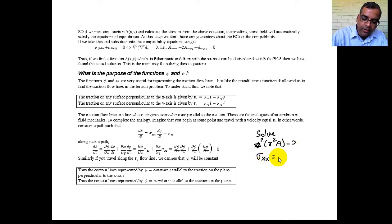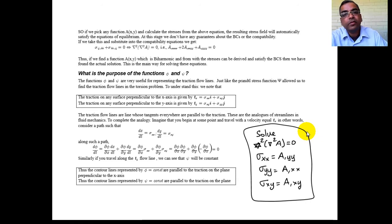Sigma yy is a comma xx, sigma xy is minus a comma xy. This will satisfy everything. I reduced it to finding del squared del squared a equal to zero. So the question is, how do you solve this? How do you solve del squared of del squared a equal to zero? There are roughly three analytical methods for doing this.